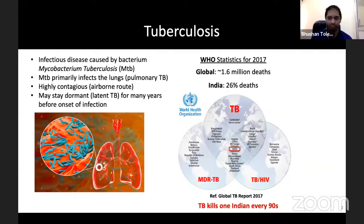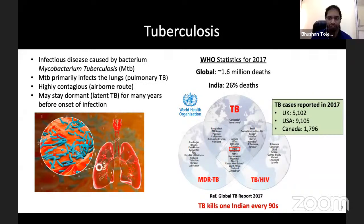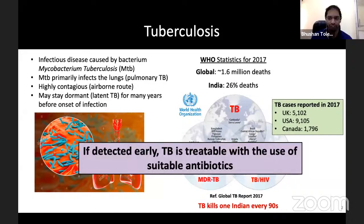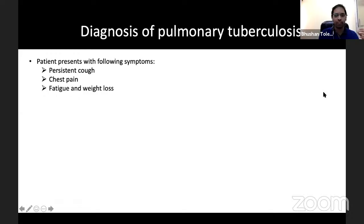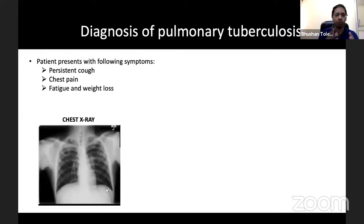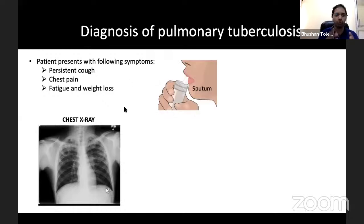If detected early, TB is treatable — that's the golden silver lining. The bottleneck is: can we diagnose it early? A person typically comes in with persistent cough, chest pain, fatigue, and weight loss. In COVID you'd mainly report persistent cough, but TB may initially seem like an ordinary cough that doesn't go away, progressing to fatigue and weight loss. Chest X-rays typically show some fluid development, and at that point sputum — lung fluid the patient coughs up — is collected in a tube.